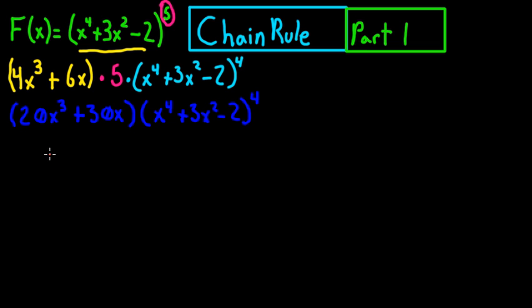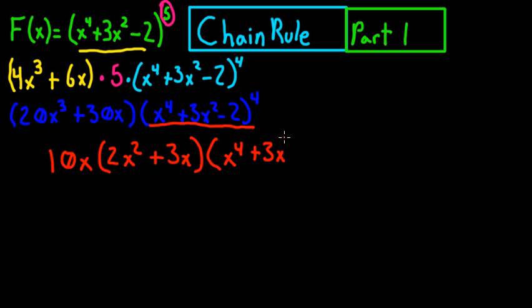So you get 10x times 2x squared, because 2x squared times 10x is going to give you 20x cubed, plus 3x times the rest of this. So that's 2x squared plus 3x squared minus 2, all to the fourth power.